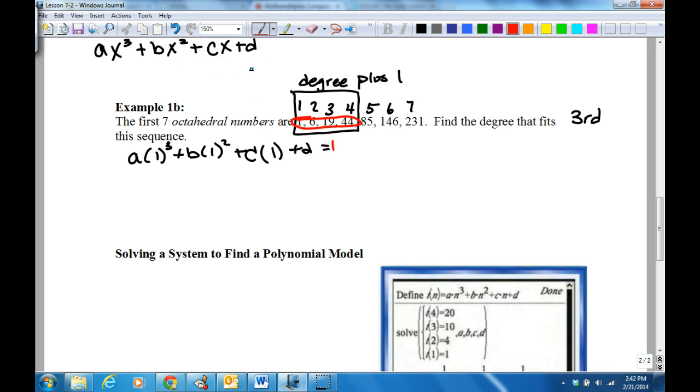Because it's a third degree polynomial, I'm going to pick that degree plus one of the numbers of the data we have. My generic form of the polynomial to the third degree is ax to the third plus bx squared plus cx plus d.